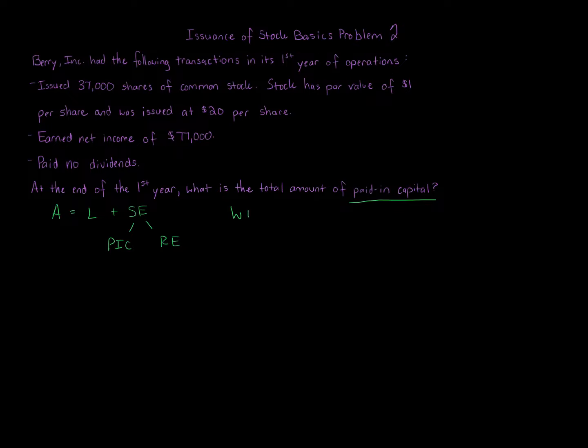And remember we have our friendly acronym, that's right, WIRE: W-I-R-E. Withdrawals, Investments, Revenue, Expenses. Withdrawals for corporations are dividends and they reduce stockholders equity. Then we've got I for investments, which is where the paid-in capital comes into play.